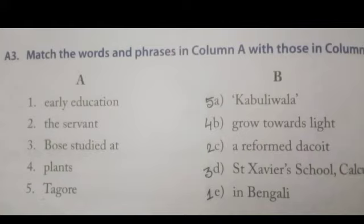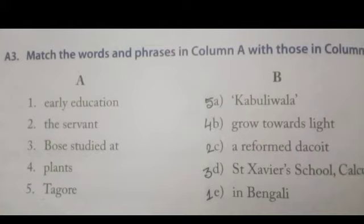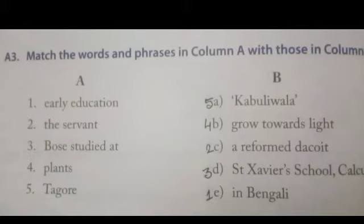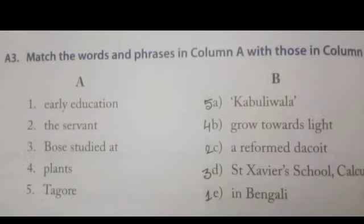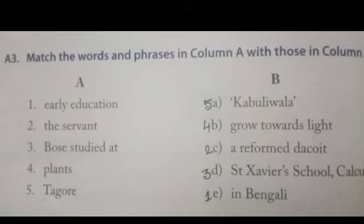So children, you have to match the answers. Number 1: Early education — answer is E, In Bengali. Number 1 matches number E. Number 2: The servant — answer is C, Ariform Dacoit. Number 2 matches number C.